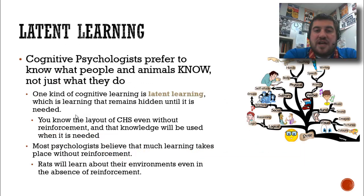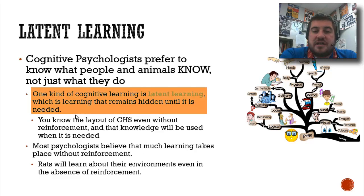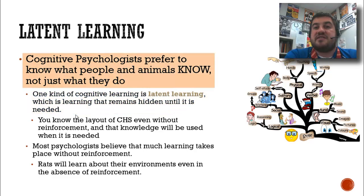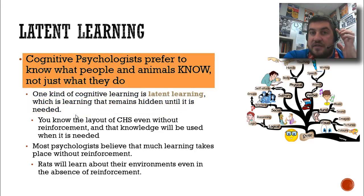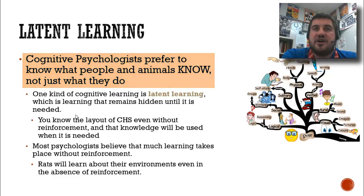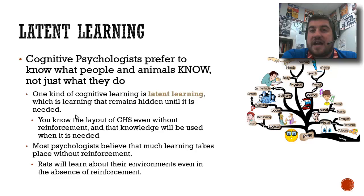Latent learning is something that you learn but it remains hidden until it is needed. Cognitive psychologists are really interested in this. Cognitive psychologists study thinking processes and what's going on in your mind. They're interested to know what people and animals know, not just what they do — because I know more than what I do; what I do is not the only things that I know.